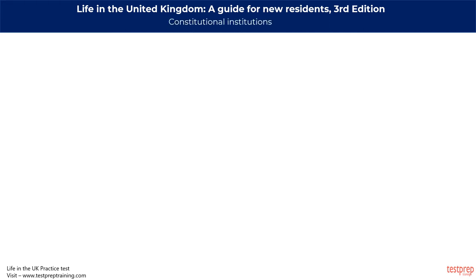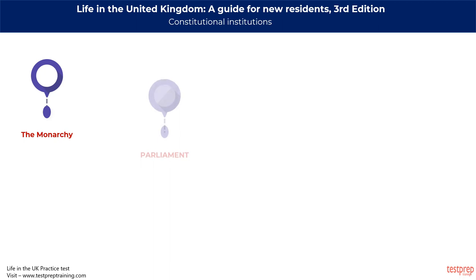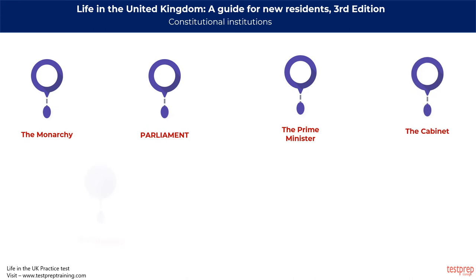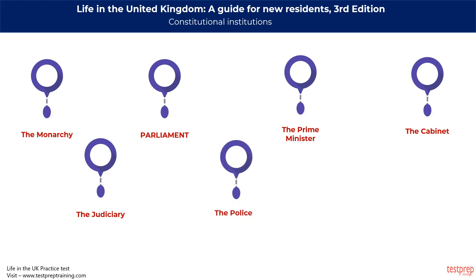In the UK there are several different parts of government. The main ones are: the Monarchy, Parliament, the Prime Minister, the Cabinet, the Judiciary and Courts, the Police, the Civil Service, and Local Government.